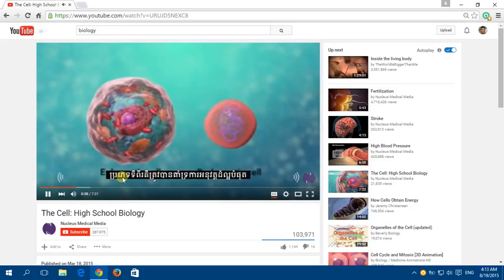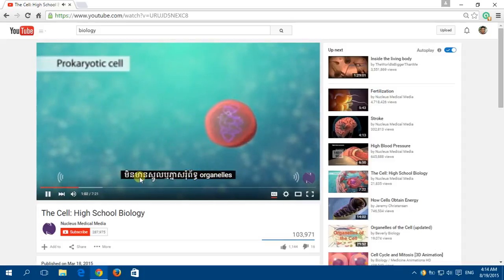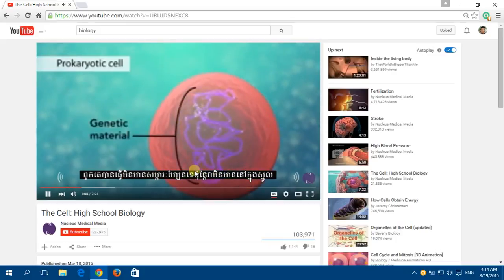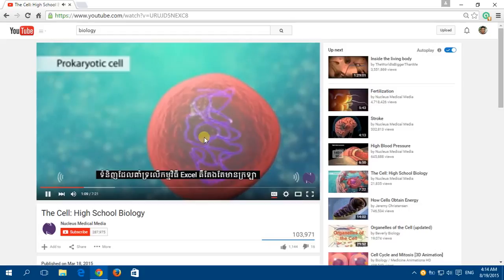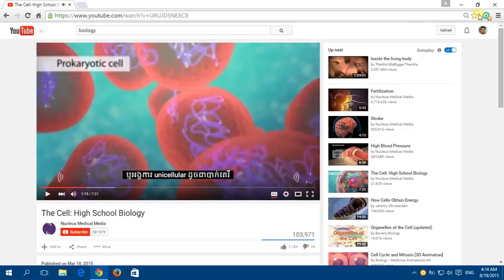The second category is prokaryotic cells. They don't have a nucleus or membrane-enclosed organelles. They do have genetic material, but it's not contained within a nucleus. Prokaryotic cells are always one-celled or unicellular organisms.